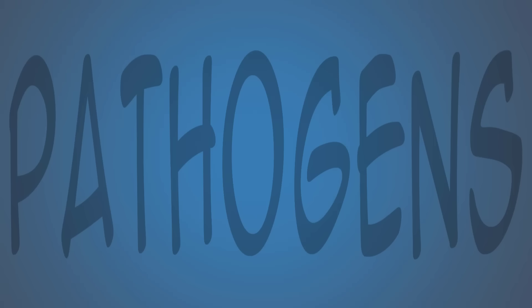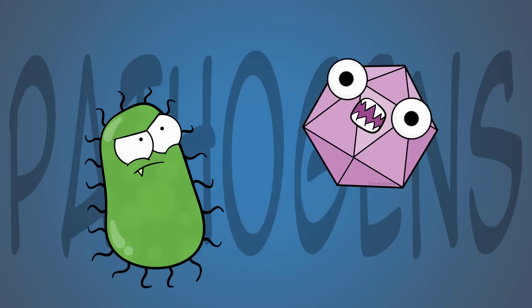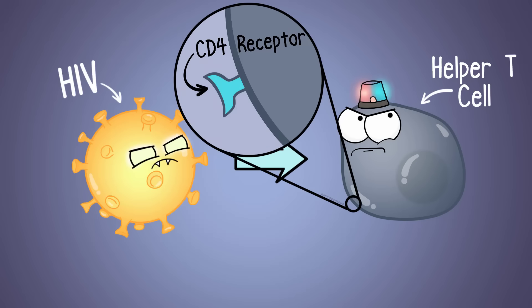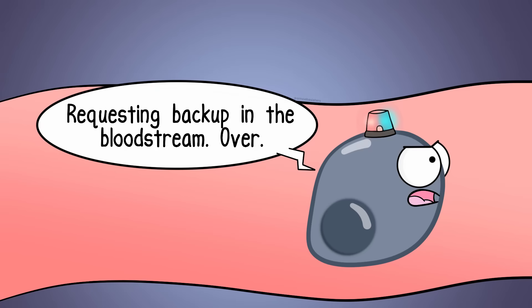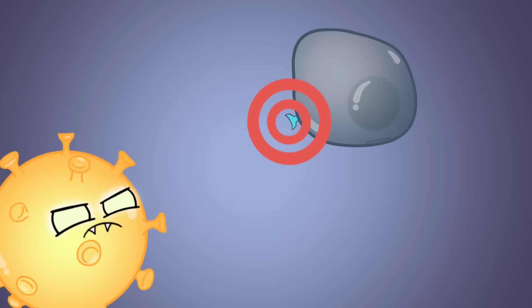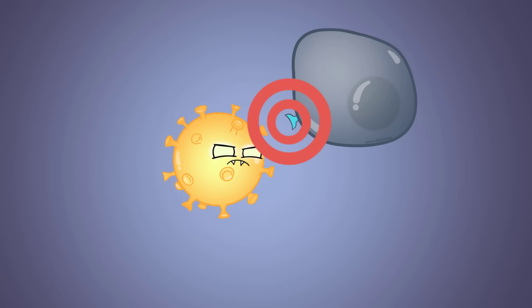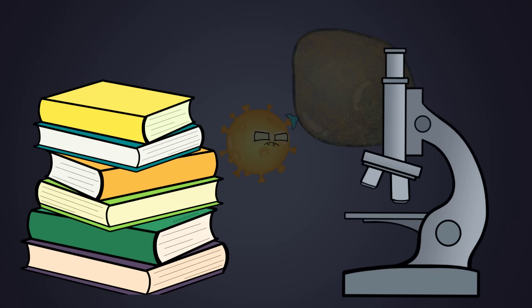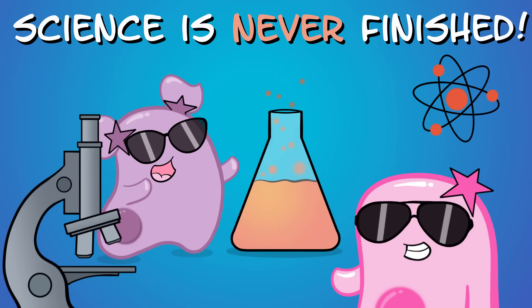There are also pathogens, such as viruses or bacteria, that can take advantage of cell signaling. Consider the virus HIV, which targets helper T cells. Helper T cells are important immune cells that have a CD4 receptor on their surface, which allows them to communicate with other immune cells. However, HIV targets that CD4 receptor — it is because of the virus binding to that receptor that the virus can attach and infect the cell in the first place. This continues to be researched for treatment options, and the understanding of cell signaling continues to expand.